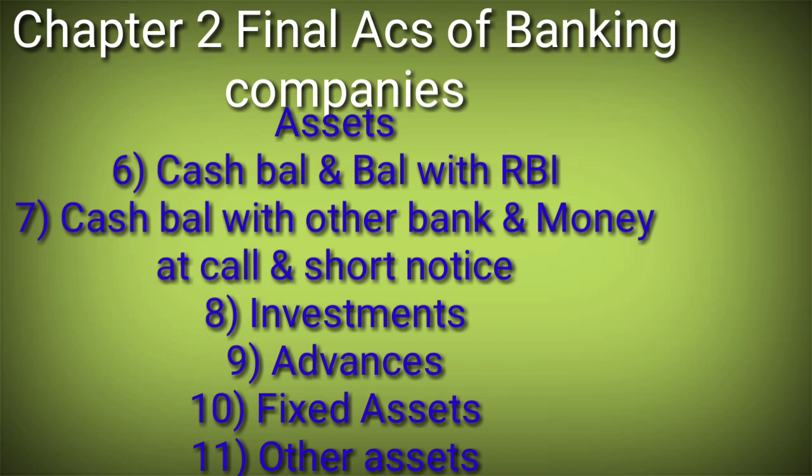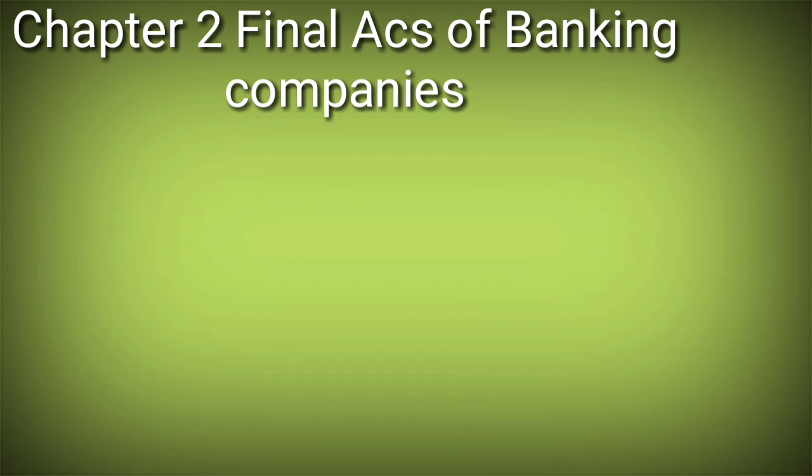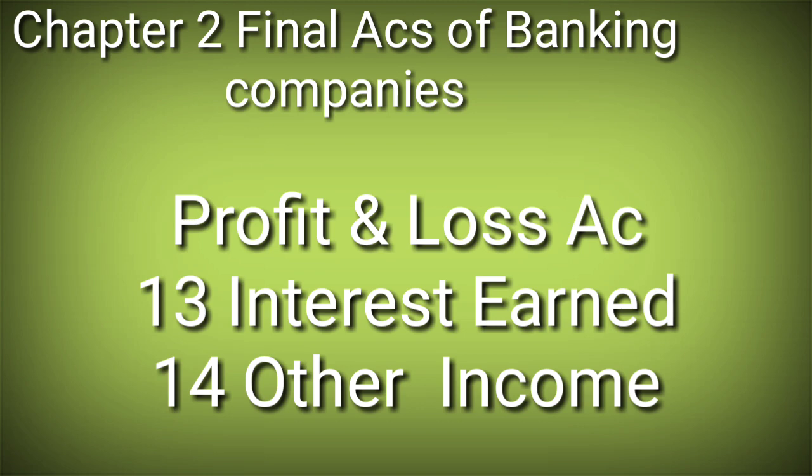Schedule 8 is Investments - if you have investments in shares, gold bullion, or silver bullion, you write them here. Schedule 9 is Advances. Schedule 10 is Fixed Assets. Schedule 11 is Other Assets. These cover all the points of the assets side.